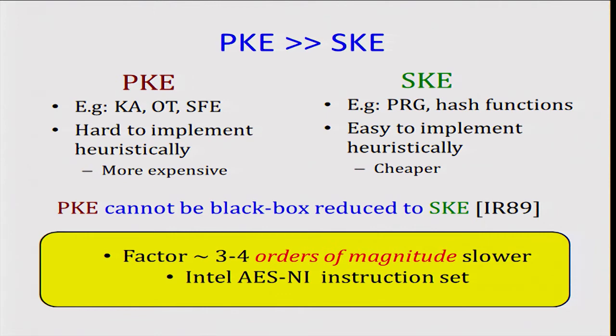On the other hand, for symmetric key operations like pseudo random generators or hash functions, it's typically easier to implement heuristically. There are a lot of candidates and the parameters are typically smaller and therefore they are also cheaper in practice to implement.